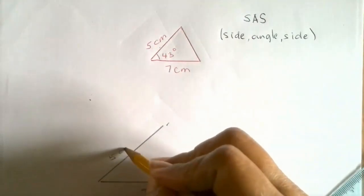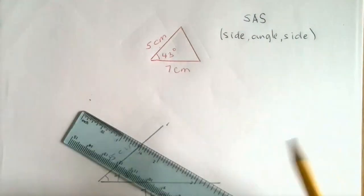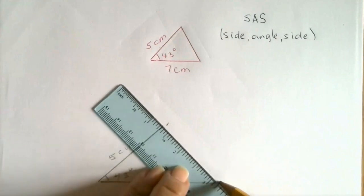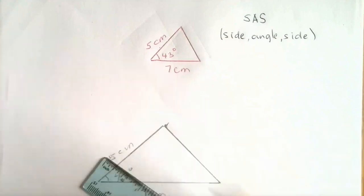Now all you have to do is just join the two ends of your triangle and there's your triangle.